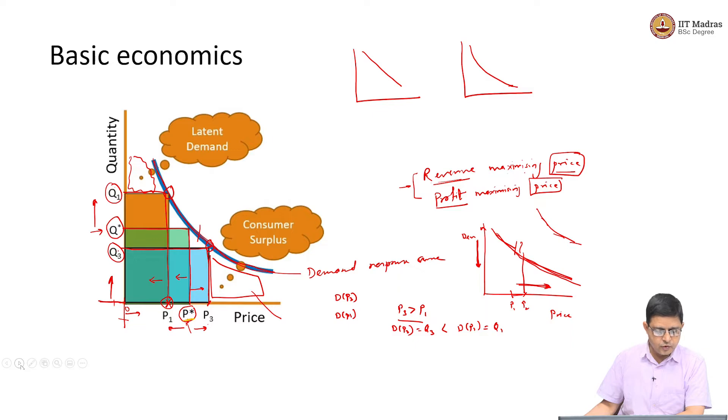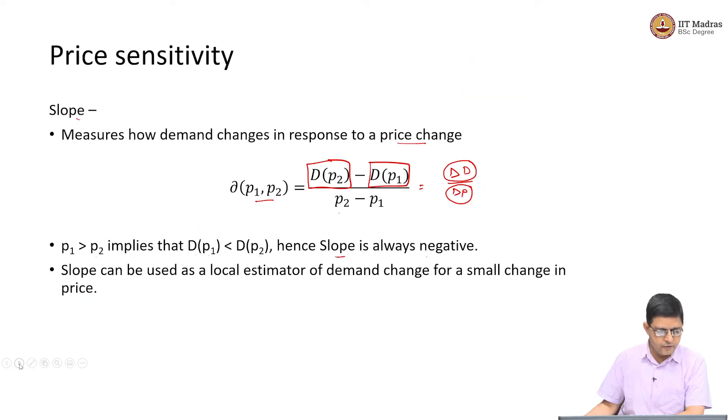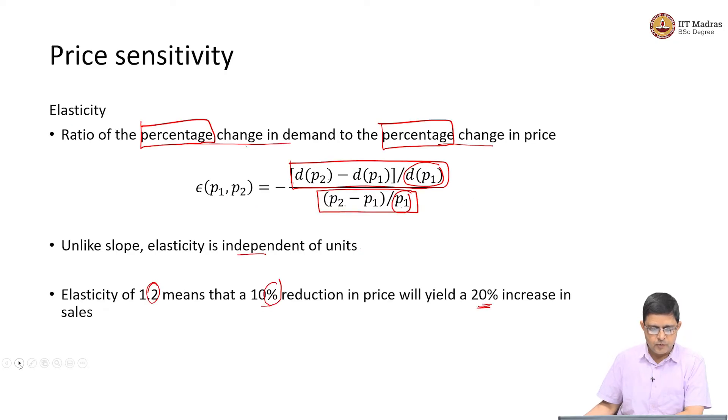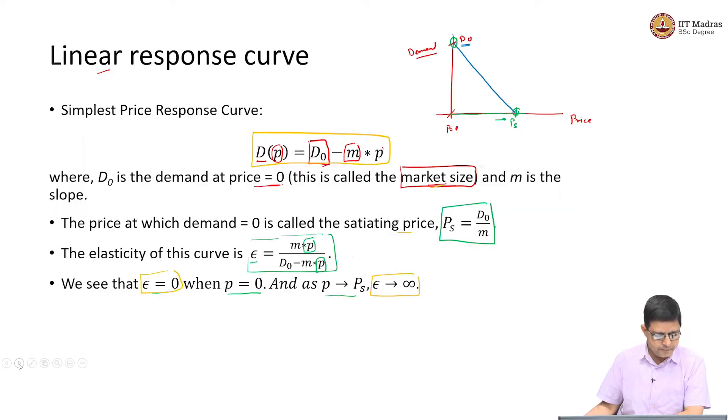We saw slope and elasticity to be the way to measure price sensitivity, and we saw two types of relationship. One was a simple linear relationship, and the other one was a relationship which maintains the elasticity in the linear demand response curve.